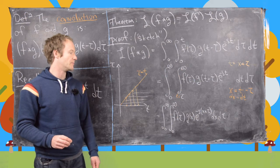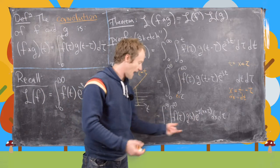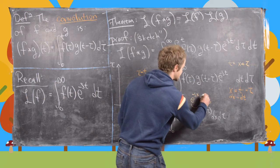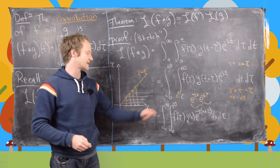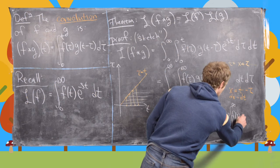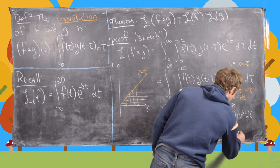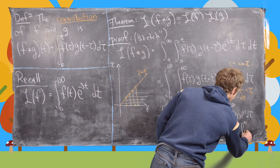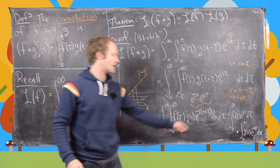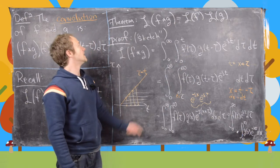The integrand is now a function of x times a function of tau. Splitting the exponential gives e to the minus sx times e to the minus s tau. This allows us to separate the double integral into the integral from zero to infinity of f of tau e to the minus s tau d tau, times the integral from zero to infinity of g of x e to the minus sx dx — which is the Laplace transform of f times the Laplace transform of g, completing the proof.